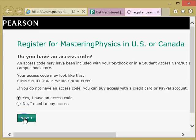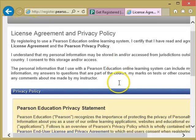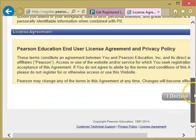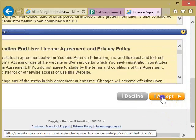You click yes, I have an access code. The next screen is a license agreement and privacy policy. So you can read through that if you like. But you eventually have to click I accept.